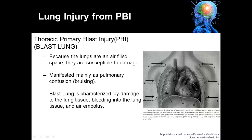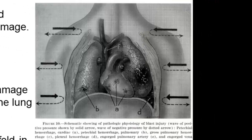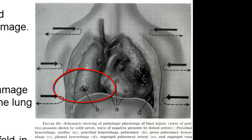Because the lungs are an air-filled space they are susceptible to damage, mainly manifest by pulmonary contusion or bruising within the lungs. Blast lung is characterized by damage to the lung tissue, bleeding into the lung tissue, as well as air embolus. Blast lung injury increases three-fold in closed space explosions, because the blast wave gets reflected off the walls back onto the individual. This picture depicts injuries that can occur in the lungs. Image A depicts small hemorrhages within the thoracic cavity affecting the heart as well as the lungs.